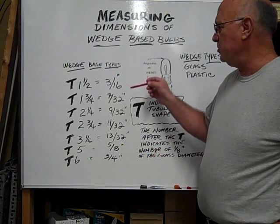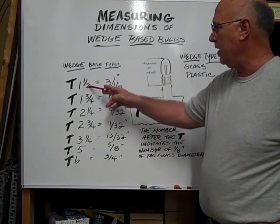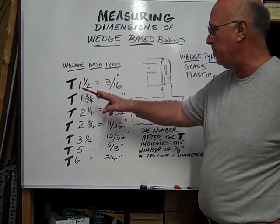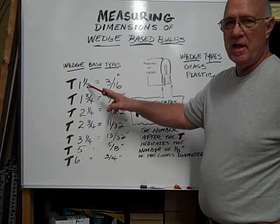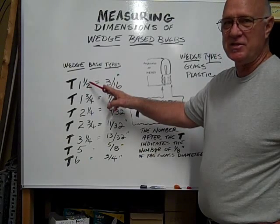The smallest size usually is a T one and a half. Now the T again is tubular-shaped. The one and a half denotes the dimension in eighths of an inch.